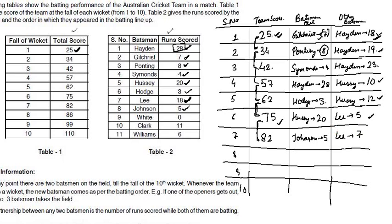The next wicket fell at the score of 86. Lee cannot be the person who fell at 86, because Lee needs 18 runs total and has only scored 7 so far. The difference here is 4, so White must be the person who fell at 86. White scored 0 runs, meaning the other 4 runs were scored by Lee. Lee's score is now 11.